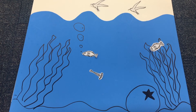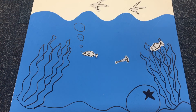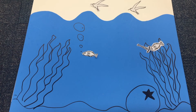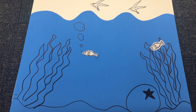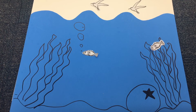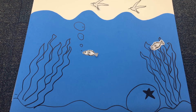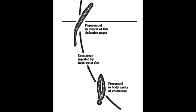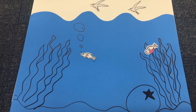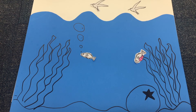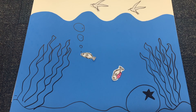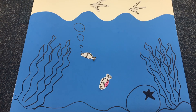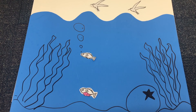The infected copepod now exhibits erratic behavior to increase the likelihood of consumption by the next intermediate host, the three-spine stickleback. Once the stickleback encounters the copepod, the fish consumes both the copepod and the procercoid within it. The procercoid develops within the fish and becomes a plerocercoid, developing segmentation and becoming much larger. The plerocercoids alter the stickleback's behavior through elevated levels of oxygen consumption from the host, forcing it to seek surface waters with higher dissolved oxygen concentrations.